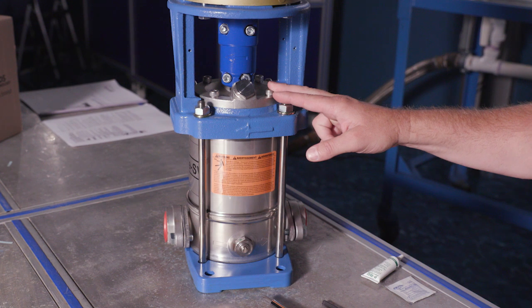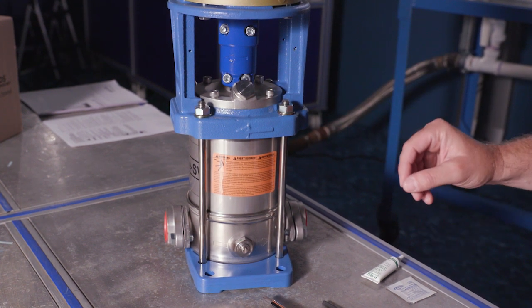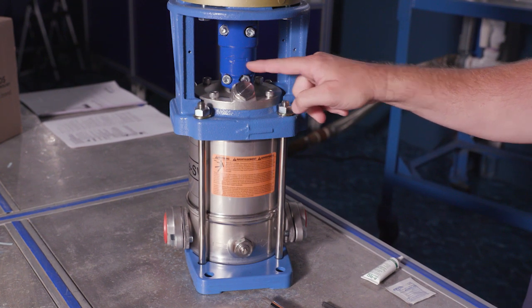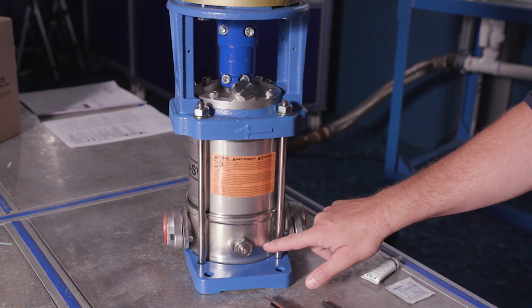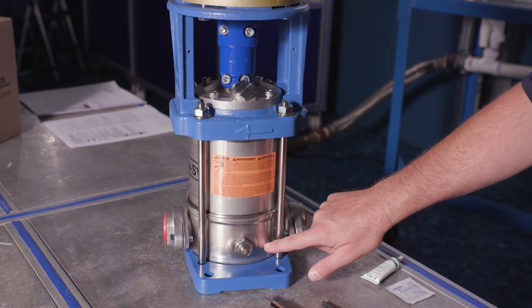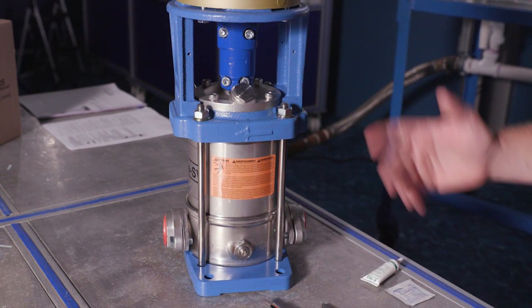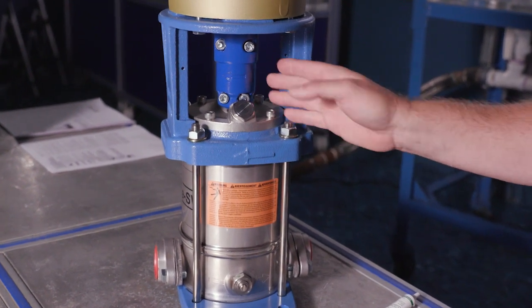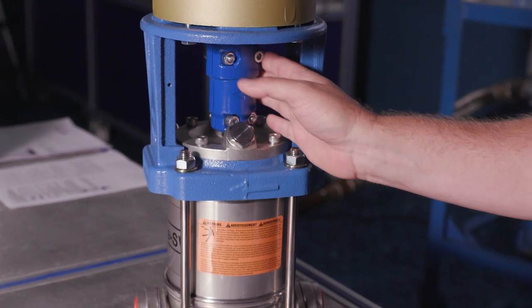Let's just take a minute and talk about the arrows because sometimes that leads to some confusion. You can see here that we have an arrow on the coupling, an arrow on the motor adapter, and an arrow on the base. Notice here that we have two different directions. Basically these two are rotation arrows.